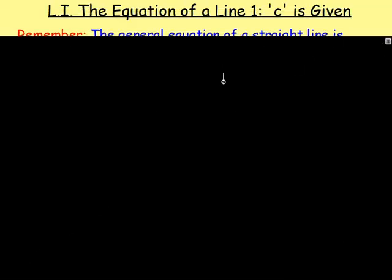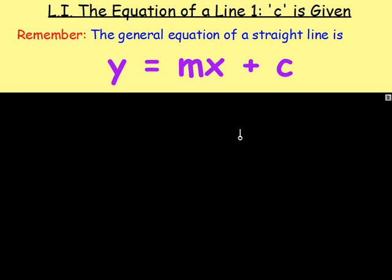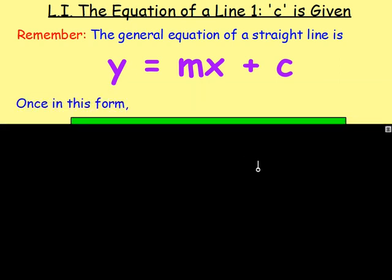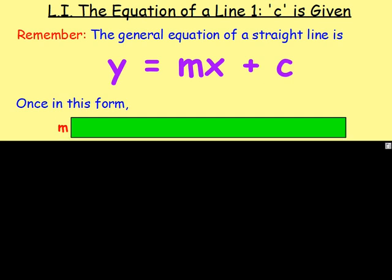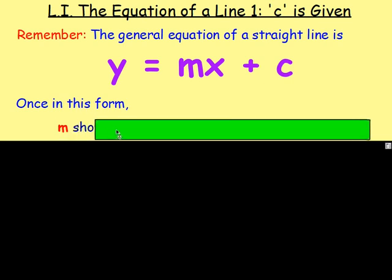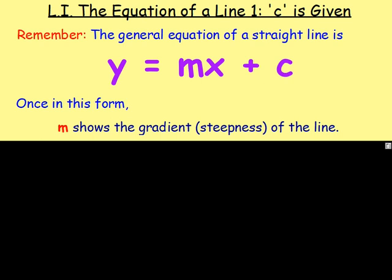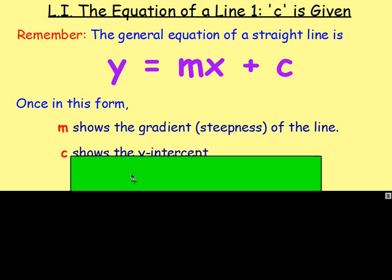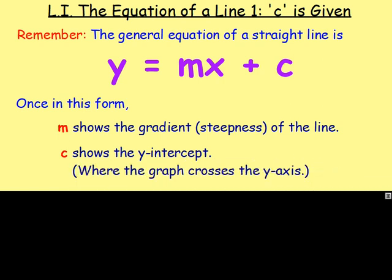We all know the equation of a straight line is y equals mx plus c. We already know that if the equation of a straight line is in this form, m represents the gradient, which is the steepness of the line. And c shows us the y-intercept — in other words, c shows us where the graph crosses the y-axis.